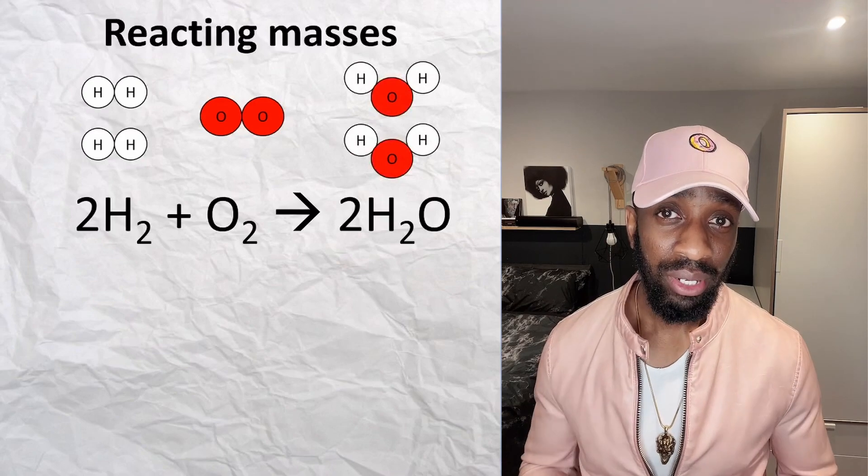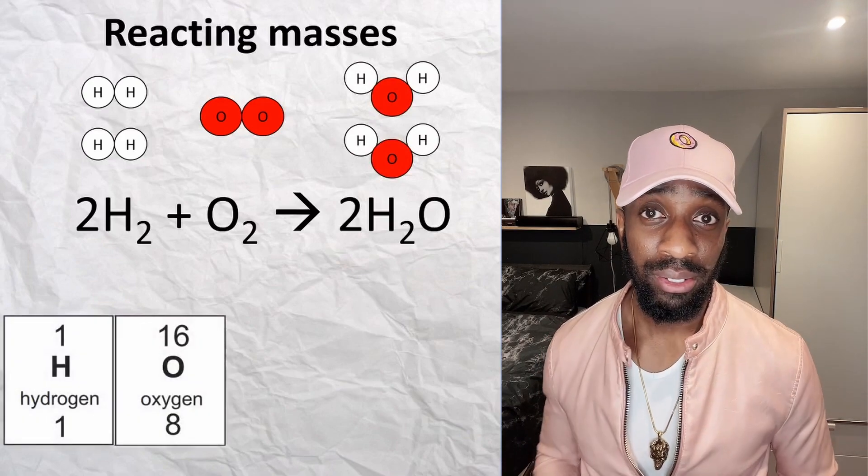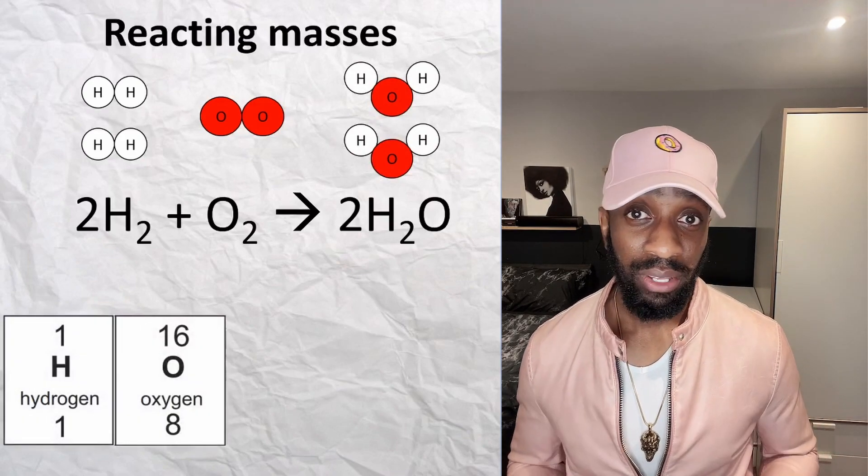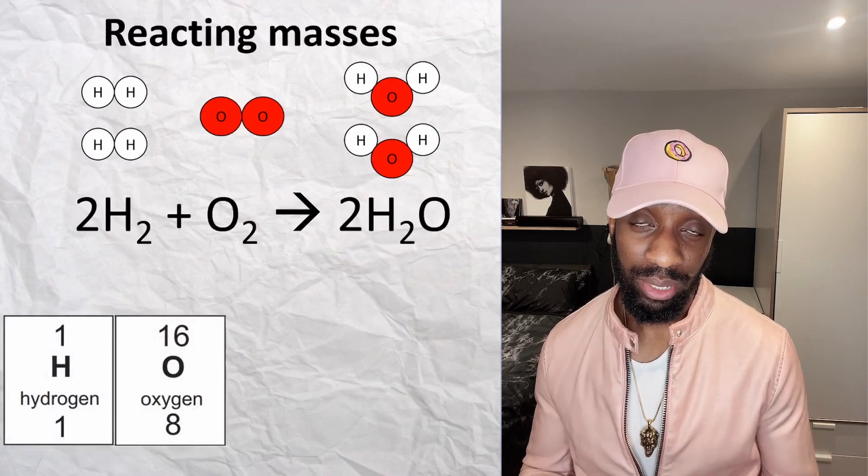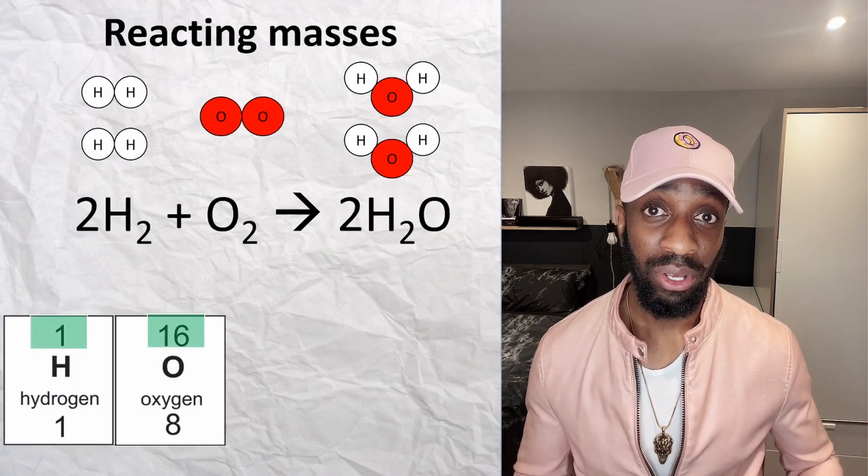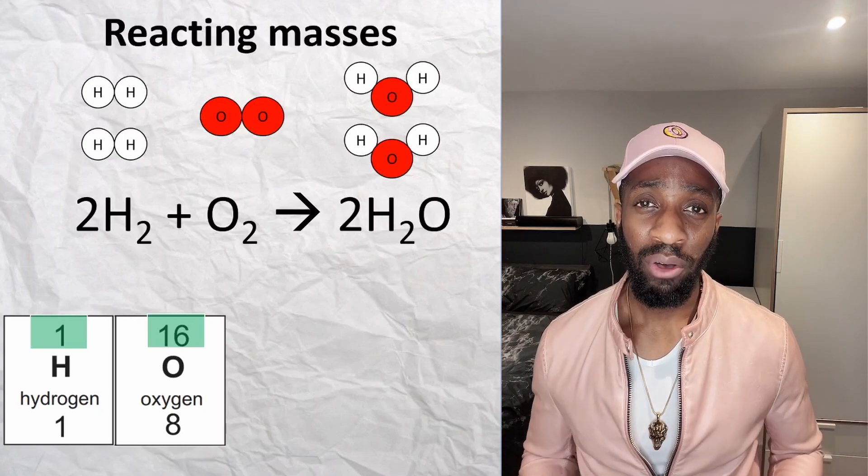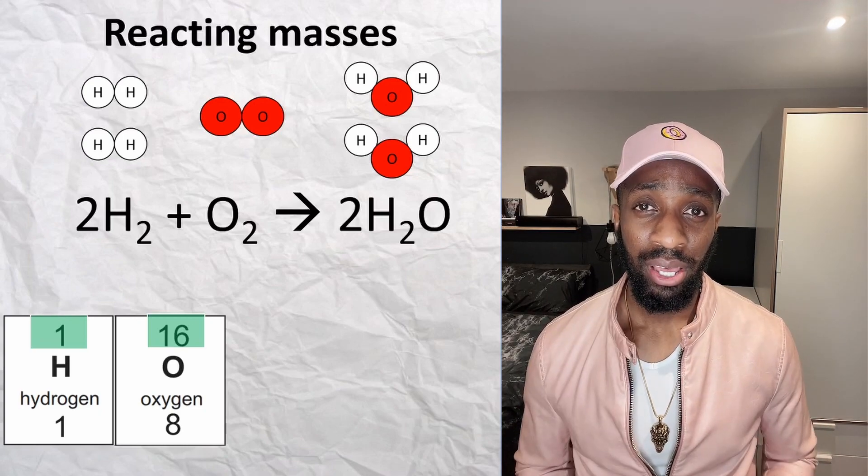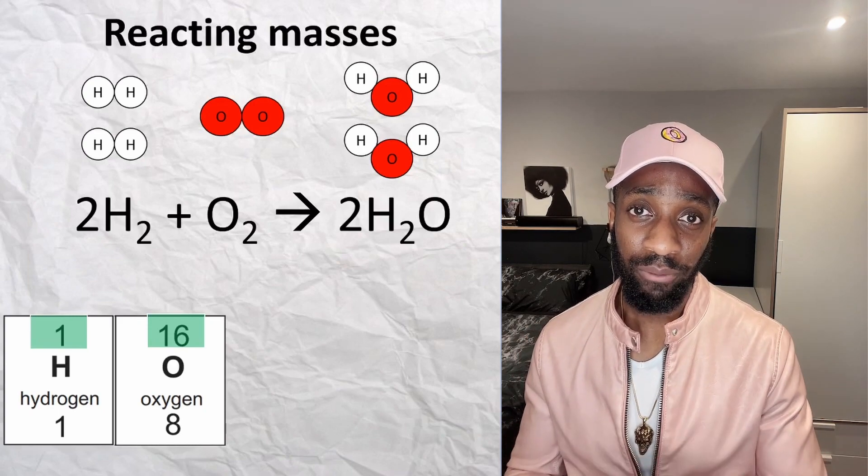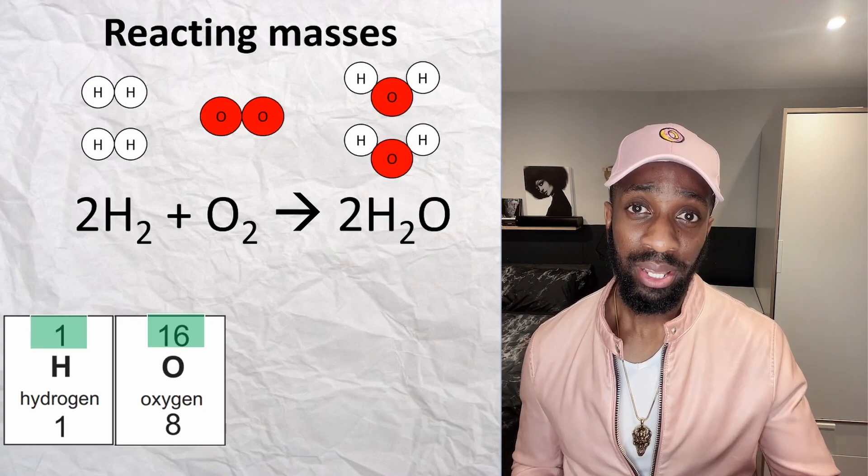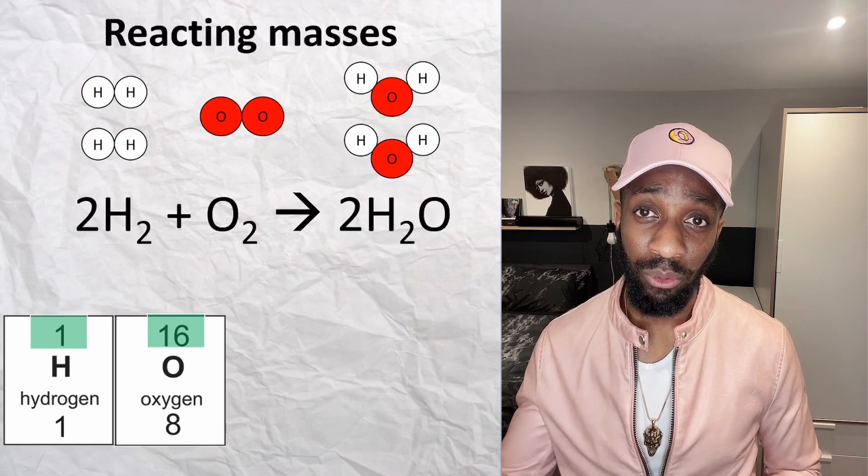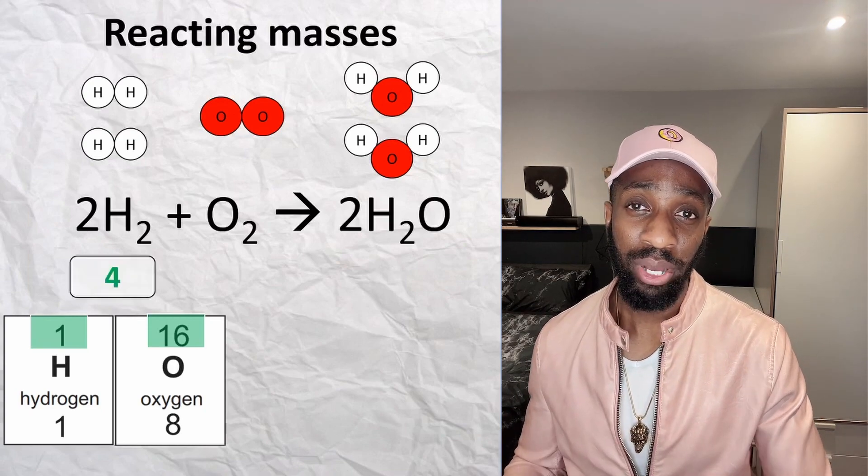When we look up these two elements on the periodic table, we see these two entries. The RAM, the relative atomic mass of hydrogen is 1, and the RAM of oxygen is 16. This means that the total mass of hydrogen we have on the reactant side is 1 times 4, the RAM which is 1 times the 4 particles we have, which gives us 4.